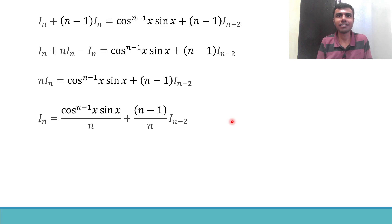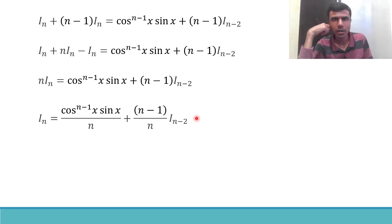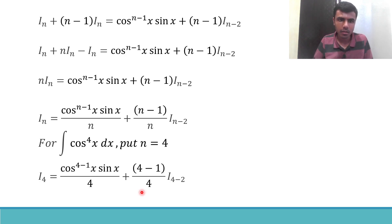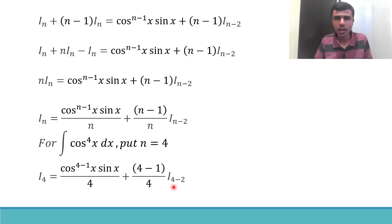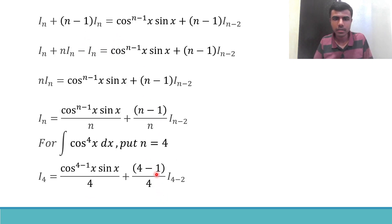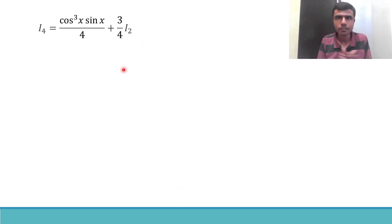We still need to find the integral of cos⁴x dx. Partial celebrations are okay! To find I_4, just put n = 4 in the reduction formula: I_4 = cos^(4-1) x · sin x / 4 + (4-1)/4 · I_(4-2), which simplifies to cos³x · sin x / 4 + 3/4 · I_2. My fourth question: how do we find I_2?